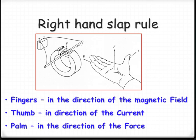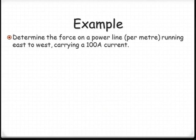So let's look at an example. It's a little bit of an abstract example. We've got a power line, and it's running from east to west. And there is a 100 ampere current flowing through this particular power line. So if we're going to calculate the force, we've got Bill. So B is going to be 5 times 10 to the negative 5. I is 100.